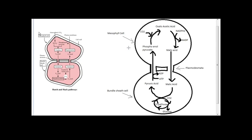In biology there's a pathway known as the C4 pathway, which is also known as the Hatch and Slack pathway. This is a very complicated diagram and it might come in your exams, so I'll be explaining how to remember this diagram easily. Go ahead and take a pen and paper — we'll not be drawing the complex diagram but instead a simpler version, which looks easier.